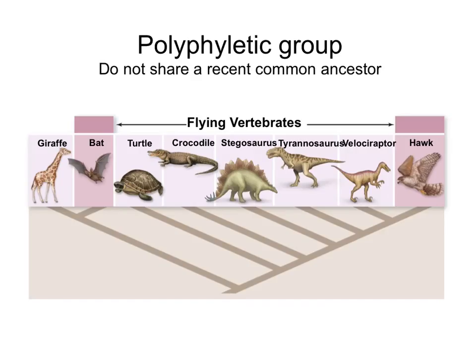Finally, the last group we can form is a polyphyletic group, which is a group that does not share a recent common ancestor. For example, if we group flying vertebrates by putting together bats and birds, we would have a polyphyletic group. The ancestor of birds is over here, and the ancestor of bats is over here, and they do not share a recent common ancestor.